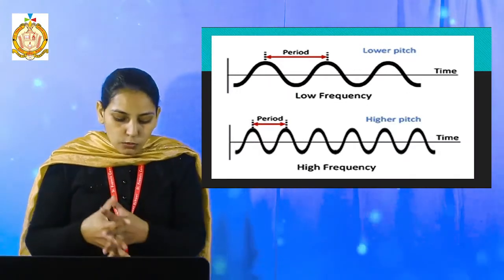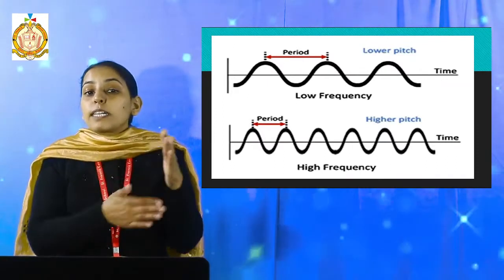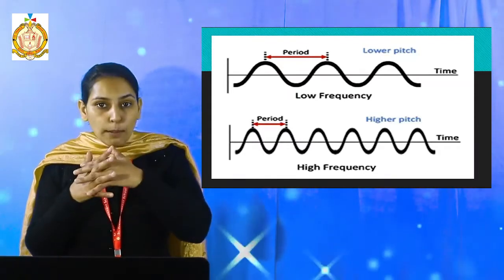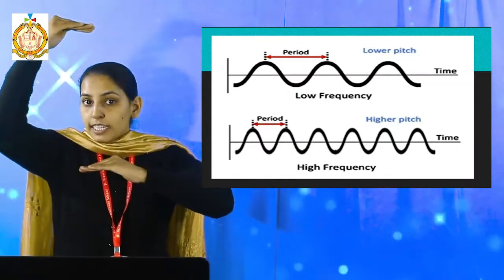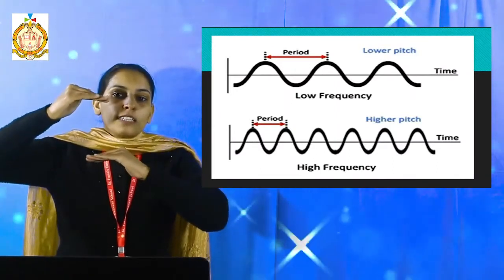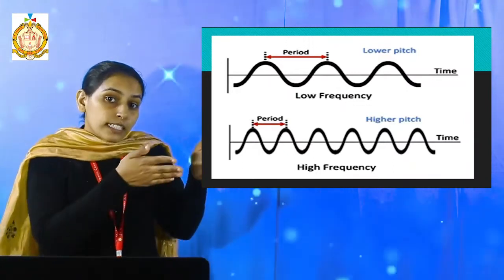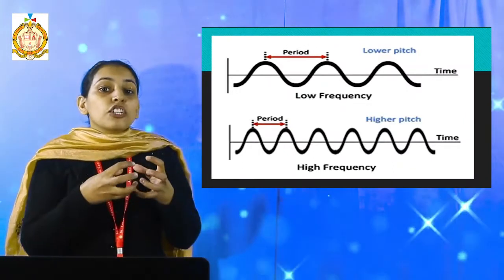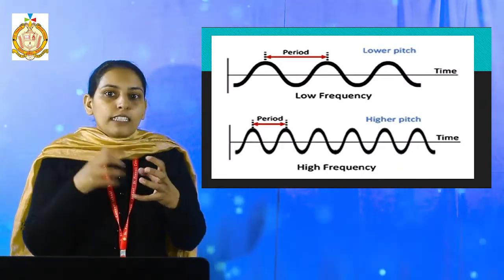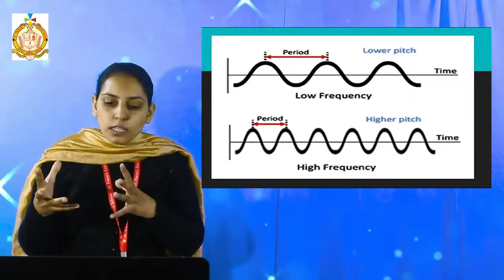The last characteristic is loudness. Loudness depends upon amplitude. If amplitude is high, then loudness is high. If amplitude is low, then loudness is low. If frequency is high, that means a shrill sound is produced. And when frequency is low, then a broad sound is produced.